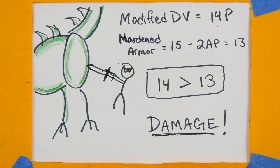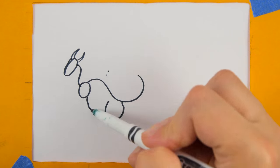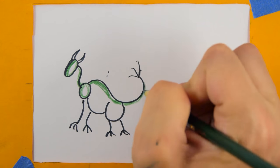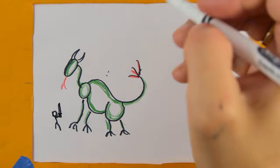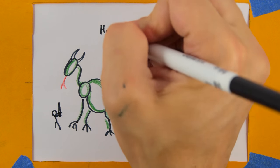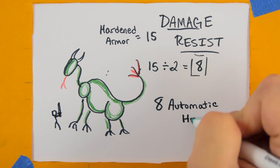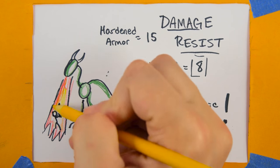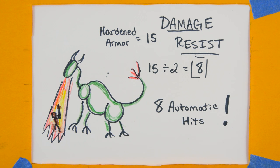At this point, you resolve the damage resist tests for the attack as normal. However, hardened armor has one more trick up its hardened sleeve. The one resisting the damage gets additional automatic hits on the damage resistance test. These hits equal half the hardened armor rating, modified by AP again, rounded up. These automatic hits are in addition to the normal resistance roll and are not taken out of the dice pool. Better bring the big guns, folks.